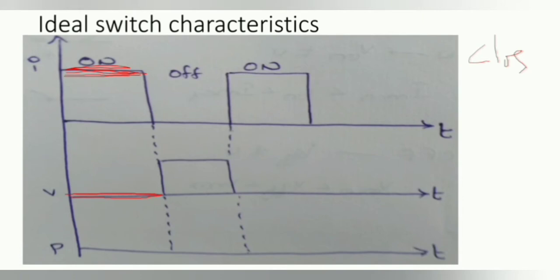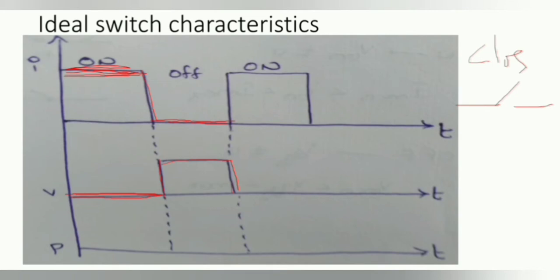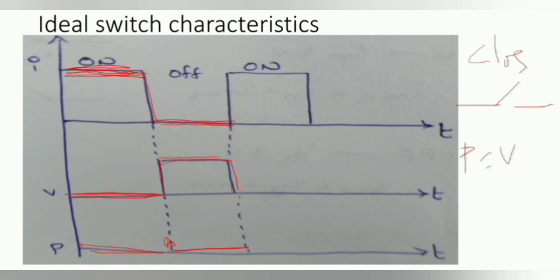During the OFF position of the switch, current is automatically zero and voltage is at its maximum. For power: during the ON stage, current is maximum but voltage drop is zero, so power P = V × I equals zero. During the OFF position, current is zero but voltage is at maximum, so again P = V × I equals zero. These are the ideal switch characteristics.